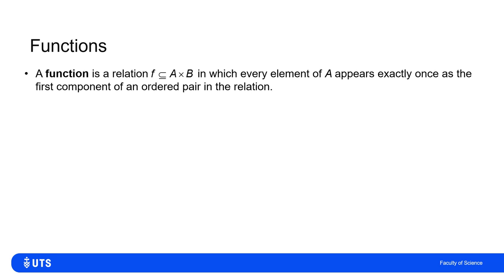We can define a function as a relation, i.e., a subset of A cross B, such that every element from set A appears exactly once as the first component in an ordered pair within this relation f.